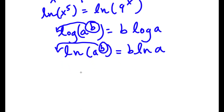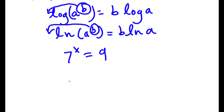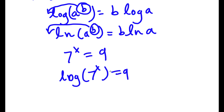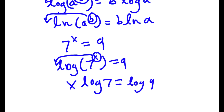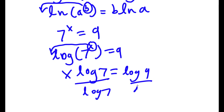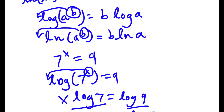And why this property is so useful: let's say you have 7 to the power of x is equal to 9. As you can see, x is an exponent, and if we want to solve for x, we want it to be a real term. So if we take the log or ln on both sides, we can move our exponent and make it a real term. Then if we divide log 7 on both sides, we get our value of x. That is why that property is so useful.